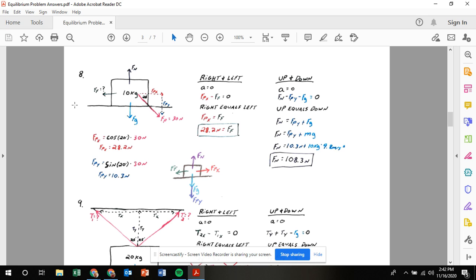Here are problems eight and nine from the Equilibrium Review. In problem number eight, you are pushing something down and to the right. The angle here is 20 degrees, you're pushing with a force of 30 newtons, and the mass is 10 kilograms. There's a normal force up, gravity down, friction goes left. We are trying to solve for the normal force and the force of friction.